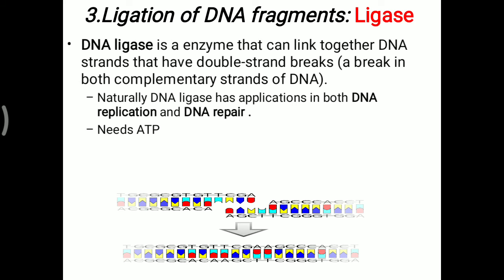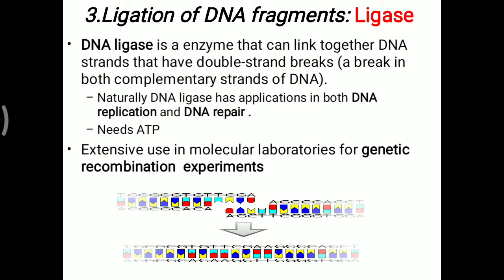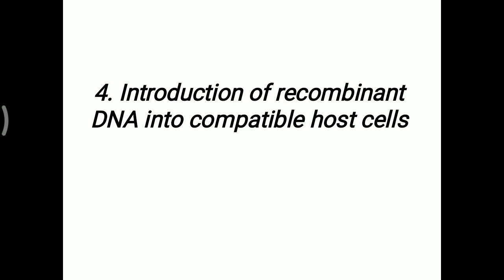Once the desired gene enters a plasmid, the recombinant DNA is generated. The joining of the two sticky ends is accomplished with the help of DNA ligase. DNA ligase is an enzyme that links together DNA strands with double-strand breaks. It naturally functions in DNA replication and DNA repair. In this recombinant reaction, ATP is needed. DNA ligase is extensively used in molecular laboratories for genetic recombination experiments.